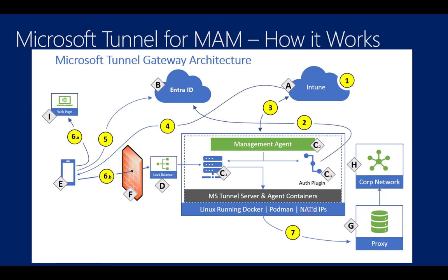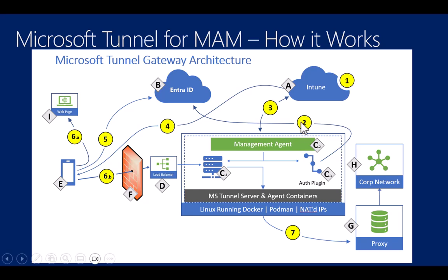The Intune administrator's steps are: first, install Microsoft Tunnel and authentication components; second, configure authentication so that Tunnel works with Entra ID; third, the management agent communicates with Intune to learn configurations; and fourth, deploy a VPN profile to devices so they can leverage the Tunnel Gateway whenever the app needs to. I go over that configuration detail in my Microsoft Tunnel video.